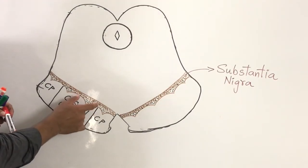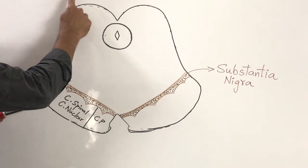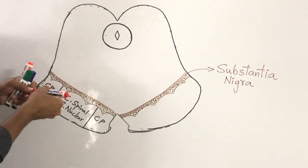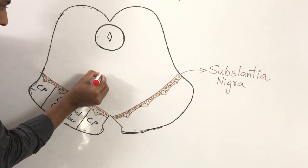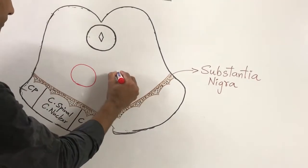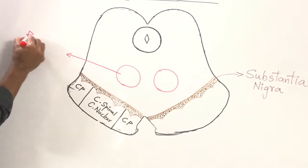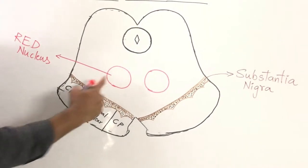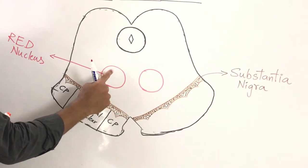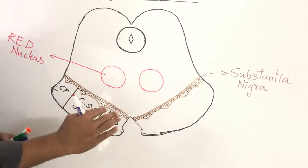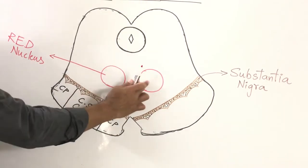Now let us focus on the internal features at the tegmental level — specifically the section at the level of the superior colliculus. The important structure present in the tegmentum at this level is the red nucleus. The red nucleus is highly vascular, which is why it appears red; it is five millimeters in diameter. Any damage to the red nucleus can lead to contralateral tremor.